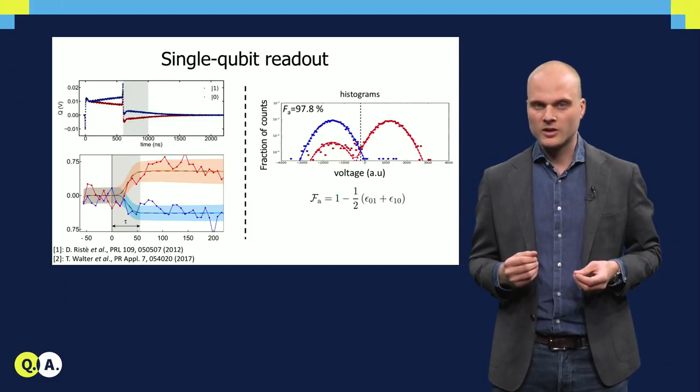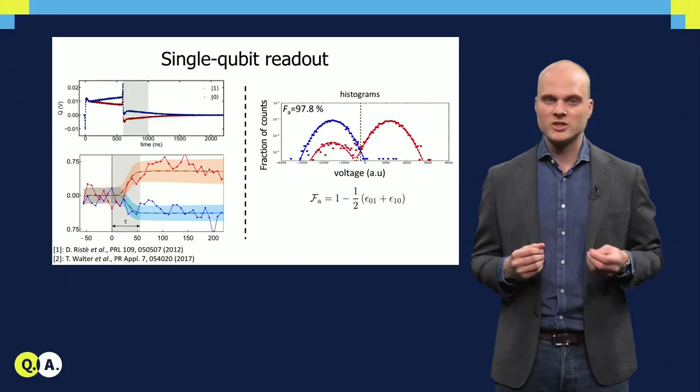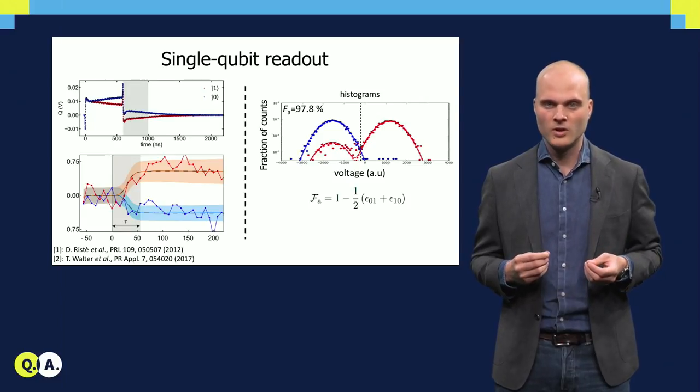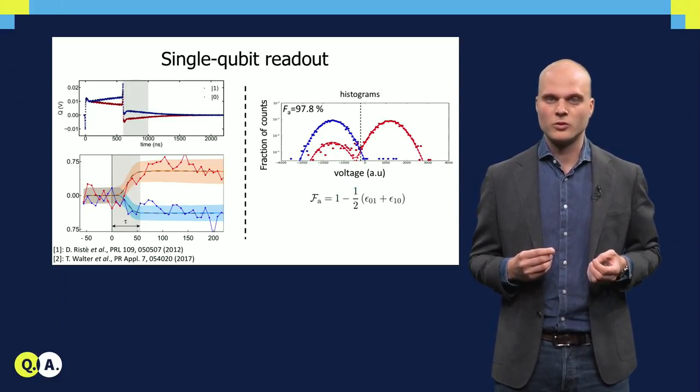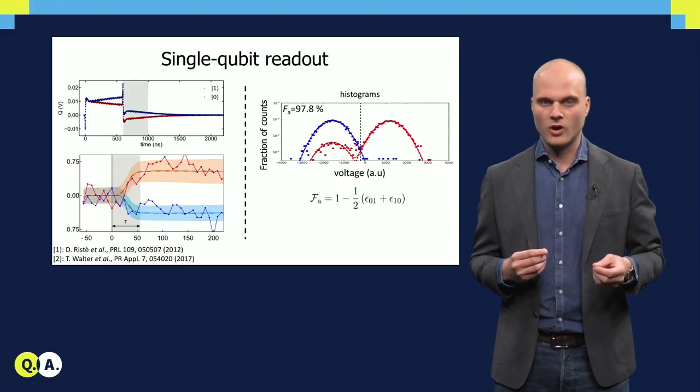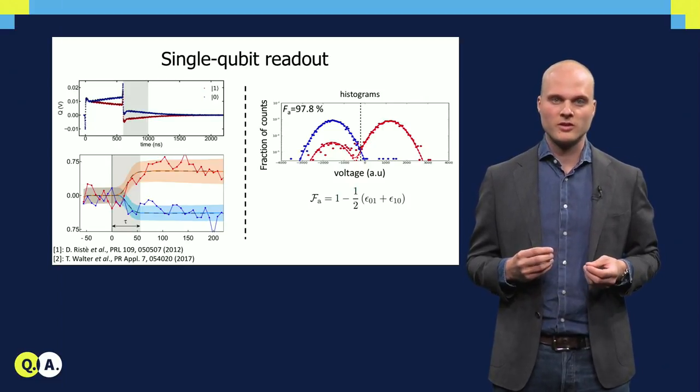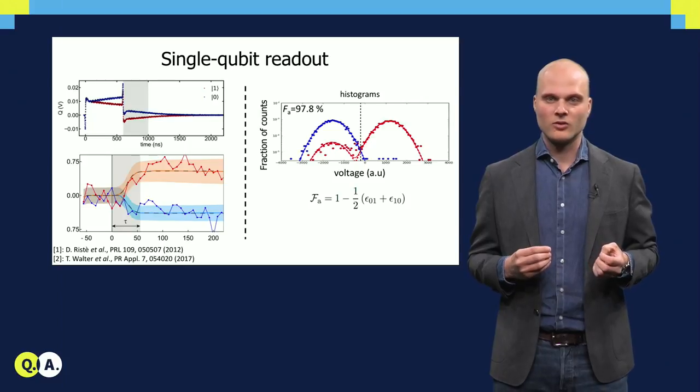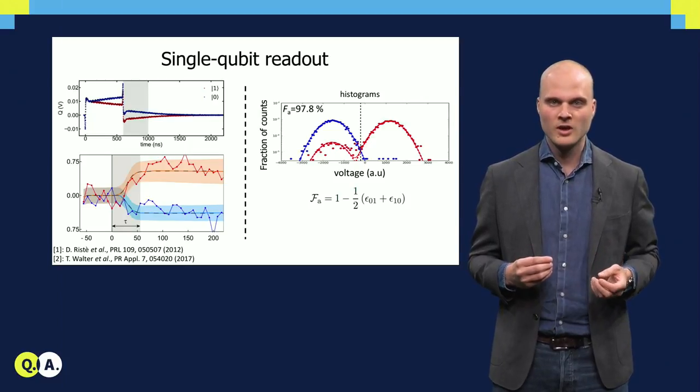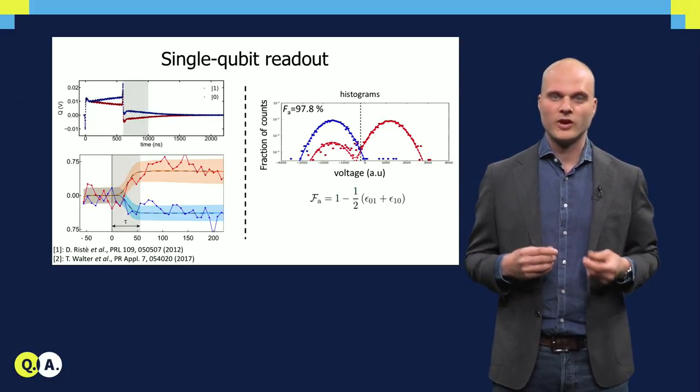The fidelity expresses the probability that the measurement returns the right outcome, averaged over the two possible qubit input states. Epsilon 01 expresses the probability of erroneously getting outcome one for a ground state input, and epsilon 10 vice versa.